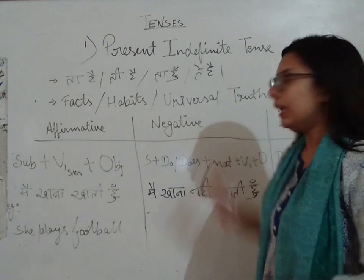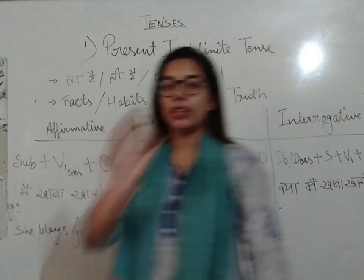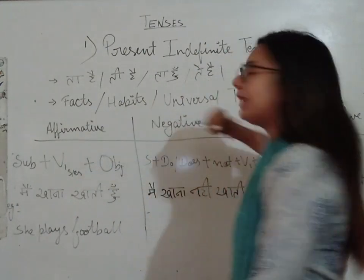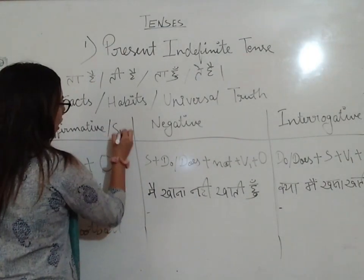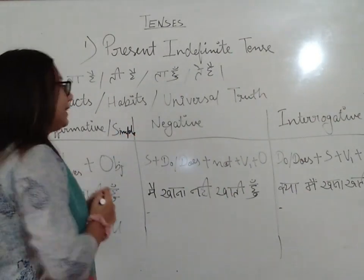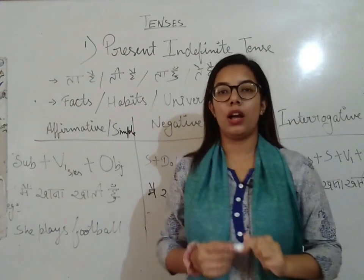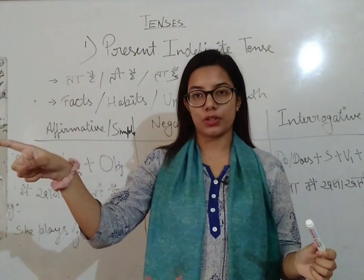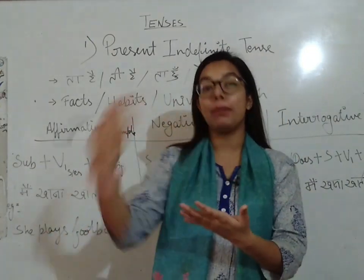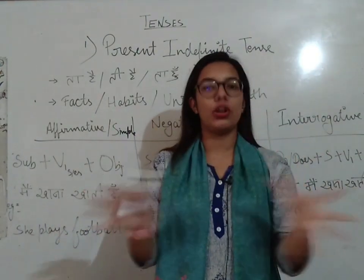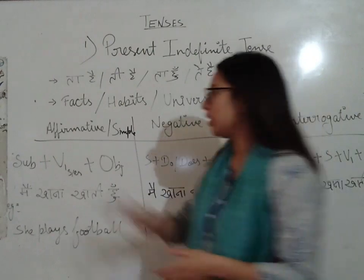Universal truth means something like 'the sun shines' — nobody can change it, so it will be present indefinite tense. Now, all tenses will have three types of sentences: affirmative sentences, negative sentences, and interrogative sentences. Affirmative sentences are also called simple sentences. The general formula for all tenses is: Subject + Verb + Object. The difference will be in helping verbs and verb forms.